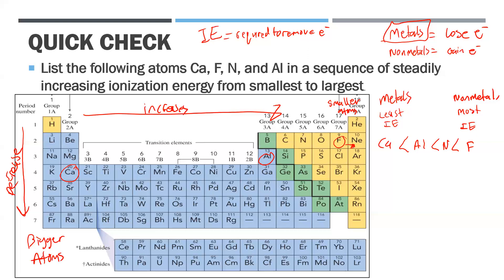I hope that helps you understand the basic trend of ionization energy. Ionization energy decreases as we go down a period and increases as we go from left to right. If you have any questions or comments just let me know, and thanks for tuning in.